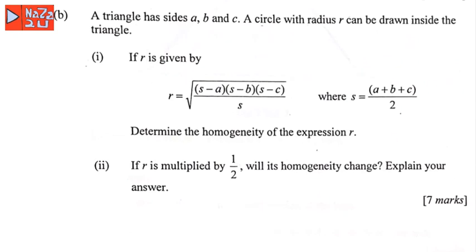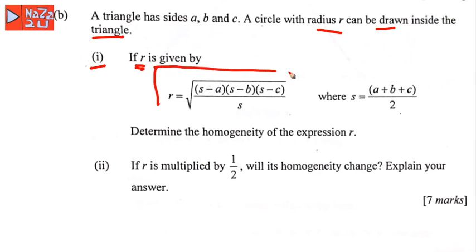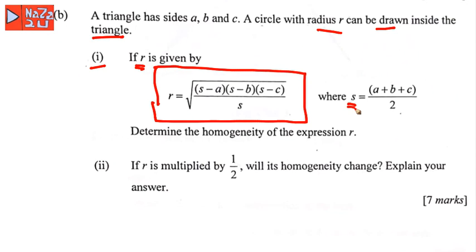Continuing to question b: a triangle has sides a, b, and c. A circle with radius r can be drawn inside the triangle. The radius r is given by the equation: r equals the square root of (s minus a)(s minus b)(s minus c) divided by s, where s equals (a plus b plus c) divided by 2.